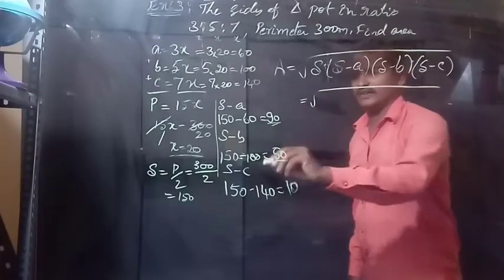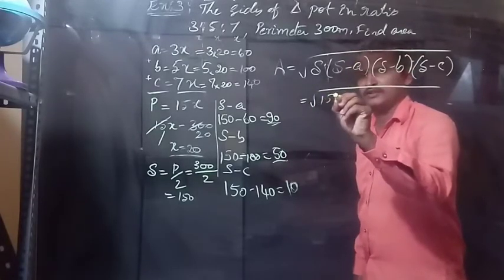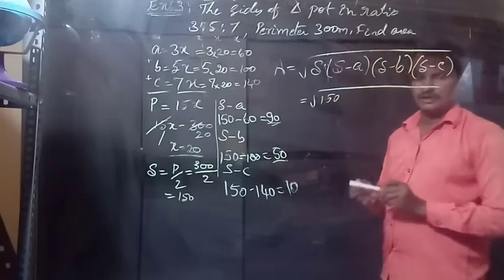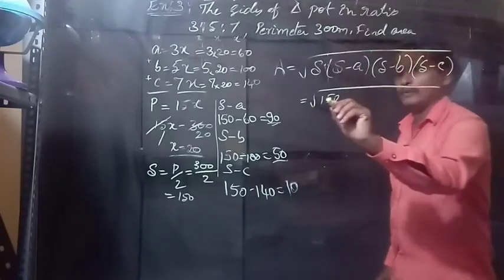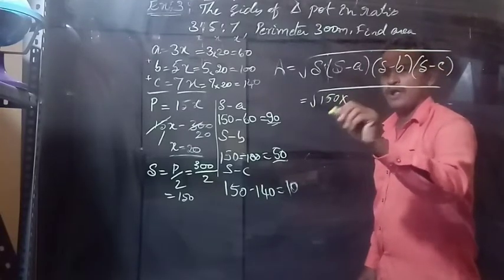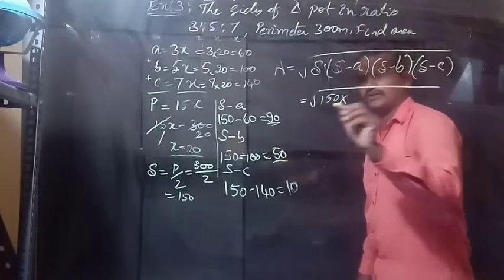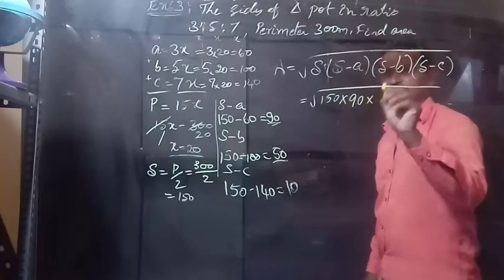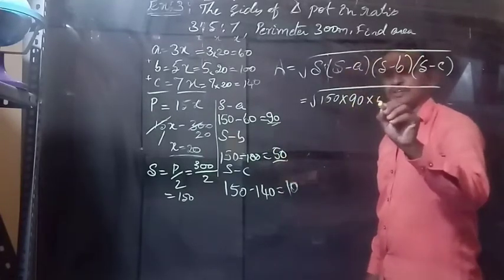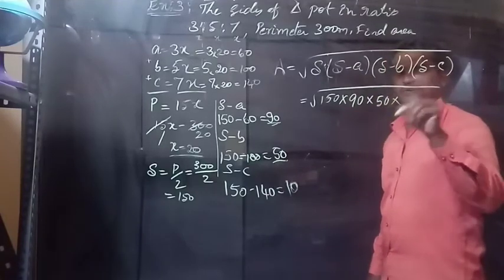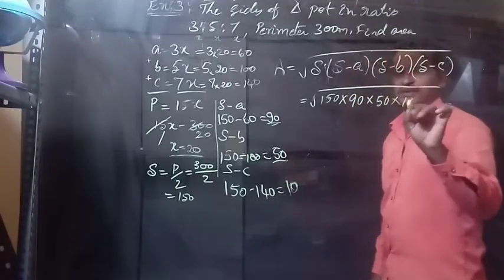Substituting the values into Heron's formula: A = √(S × (S−a) × (S−b) × (S−c)) = √(150 × 90 × 50 × 10).